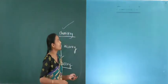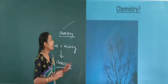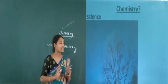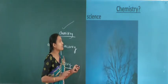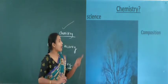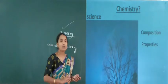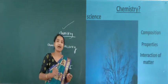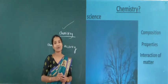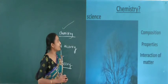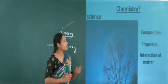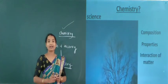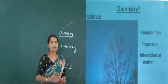So now, chemistry means what? It is the branch of science. Chemistry is a branch of science which deals with the study of composition, as well as properties, as well as interaction of matter — that is collectively known as chemistry.